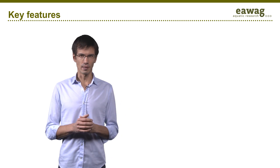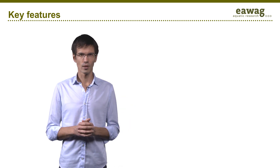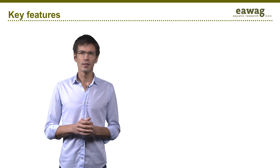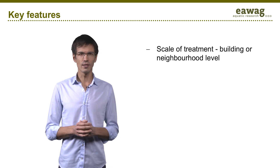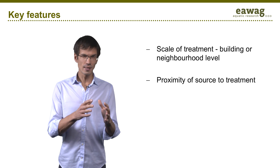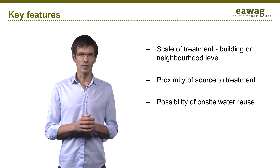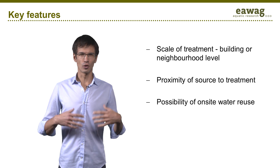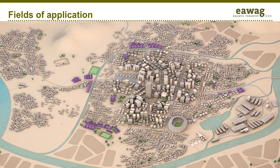Decentralized systems can also be called small-scale systems or distributed systems. However you call them, decentralized wastewater treatment can be defined by the following features: the scale of treatment at the building or neighborhood levels, the proximity of source to treatment, and the possibility of on-site water reuse — for example, for toilet flushing, irrigation, or construction.